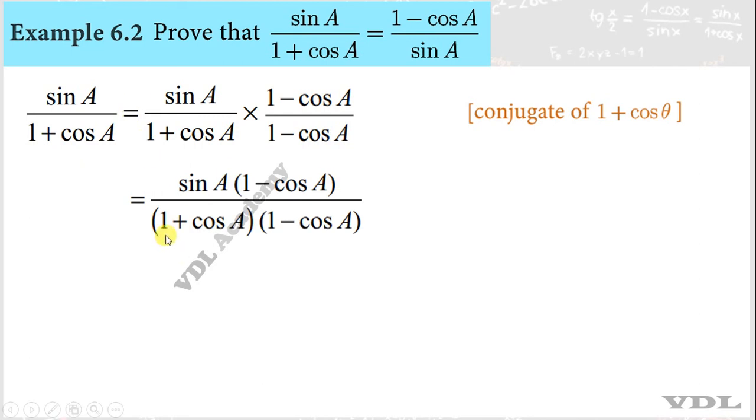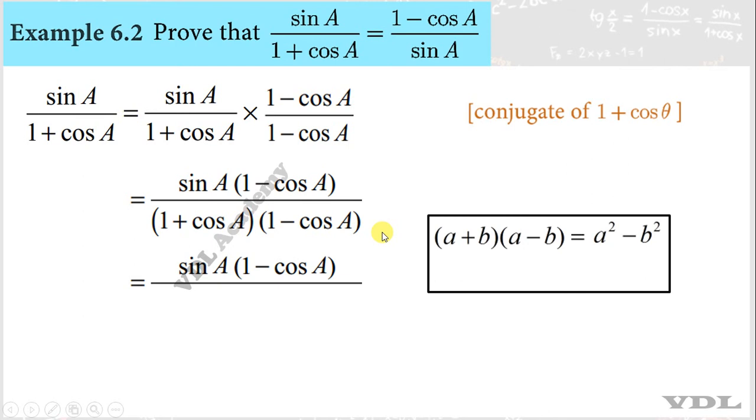Denominator, a plus b into a minus b. What formula means? a squared minus b squared. 1 squared minus cos squared theta.